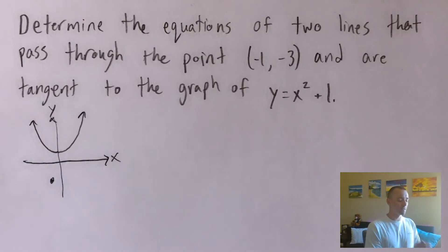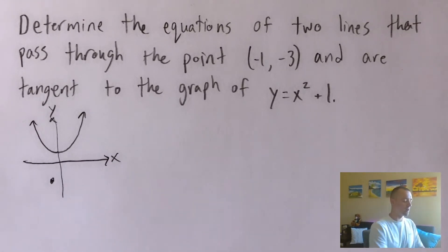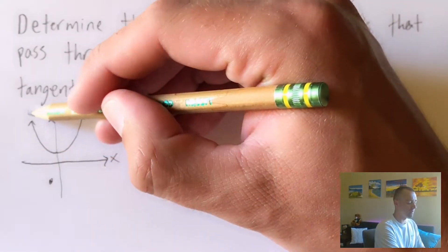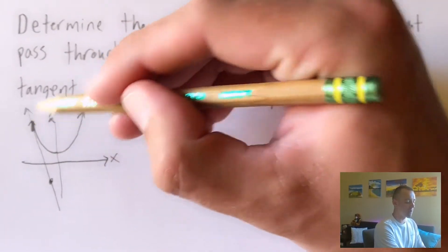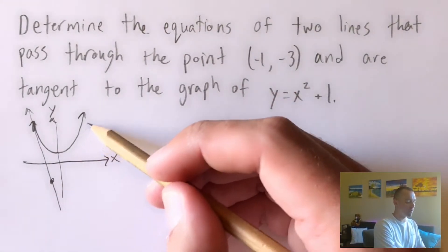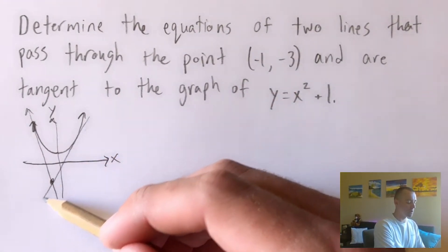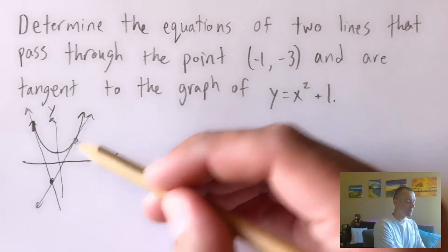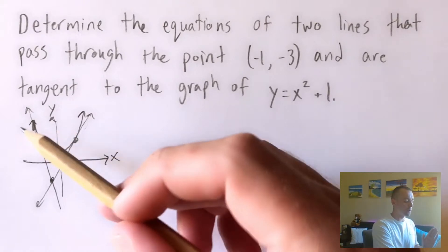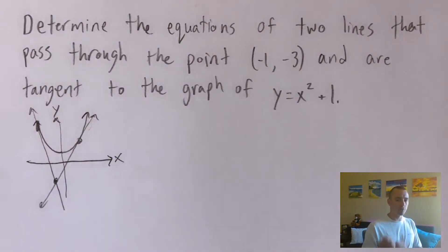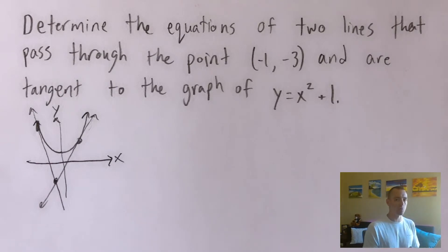And not only that, that's exactly why there are two different lines that this problem wants us to find. We can have some sort of tangent line that comes up and is tangent to this function up here, and then we can have another one that goes somewhere over here and is tangent to it right there. So what we have to do is figure out where these two points are that are actually on our function, and then we can use those points to go through the typical tangent line equation process.